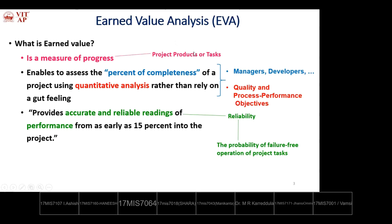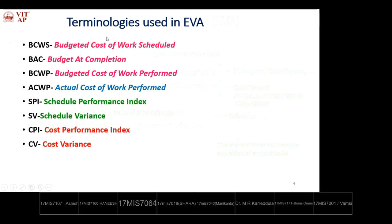Reliability here means the probability of failure-free operation of a particular task or the whole project. Once the project is started and 15 percent of the work is complete, we should begin inspections on the whole schedule — comparing what was proposed versus what is being implemented — and whether we are achieving the defined requirements in the software requirements specification.